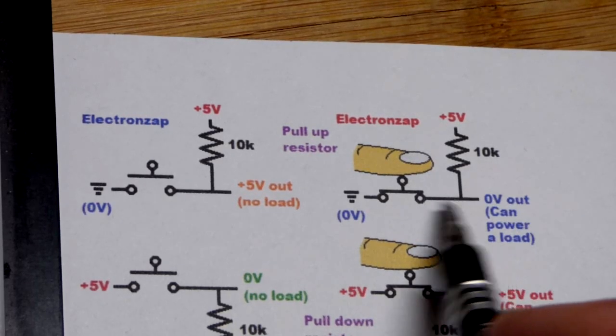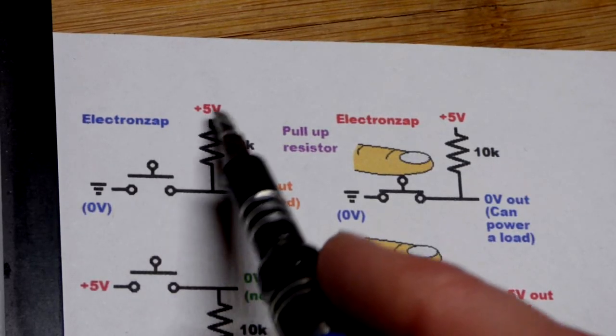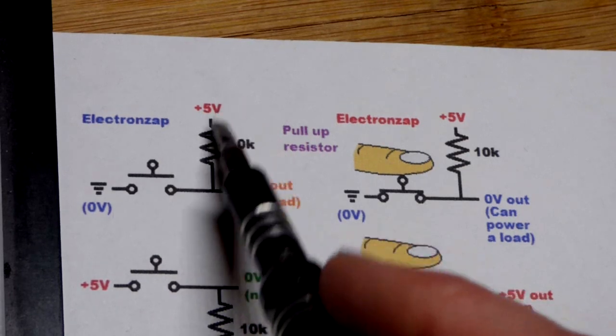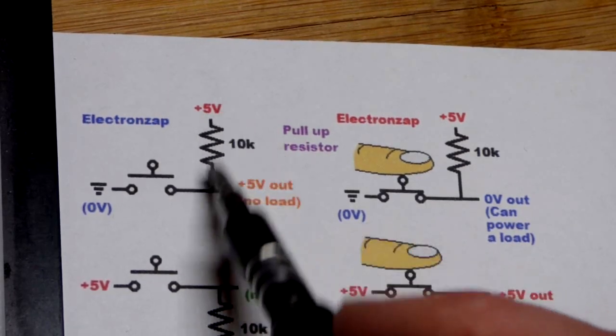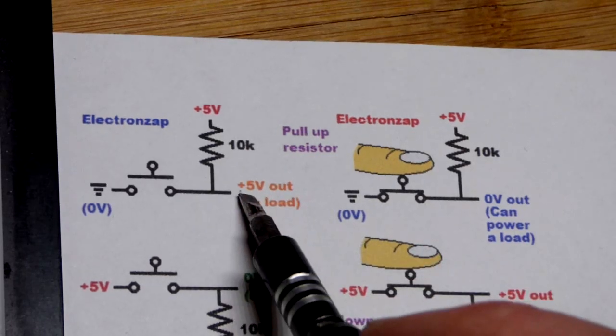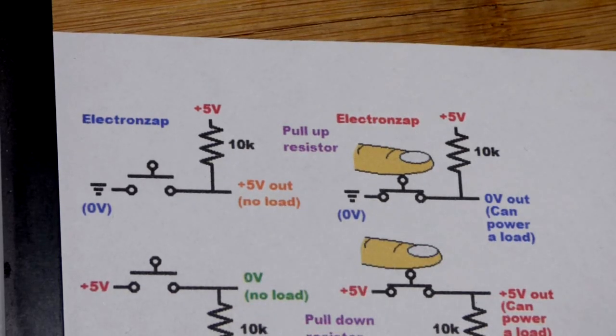So that can power something. When you release the switch though, that's just a signal voltage. So it's a 10K resistor so you can get a little current through it, but really it's not intended for powering stuff. Although under some cases you could power a really light load.